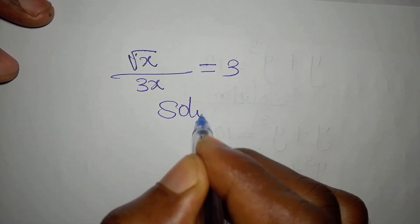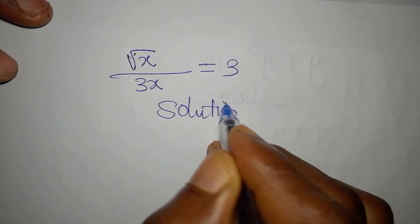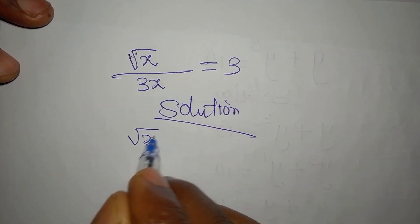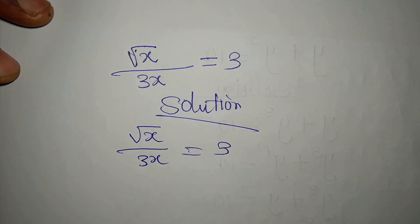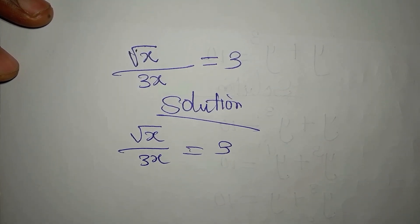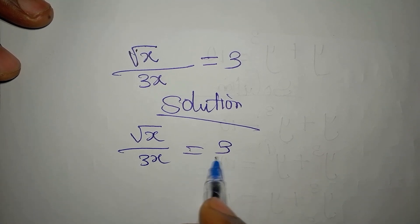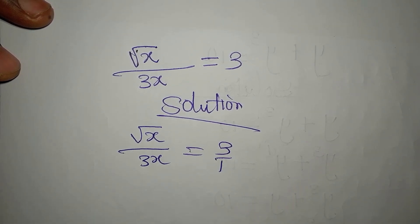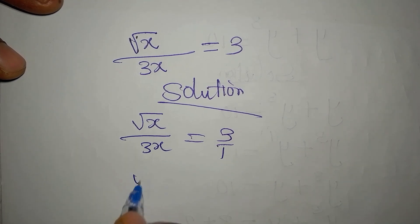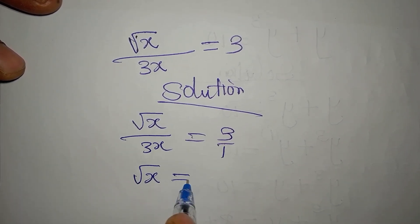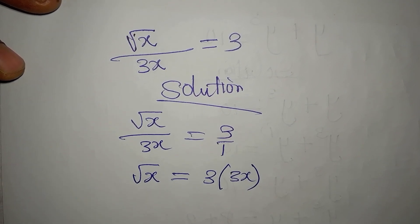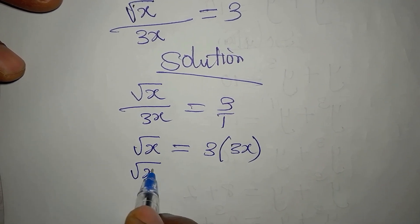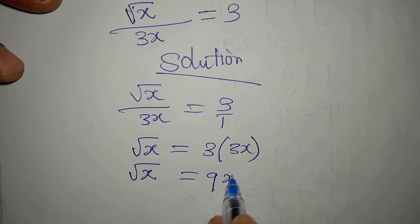Let's solve this together: root x over 3x equals 3. This is very simple because we can cross-multiply, so root x times one is root x, and that equals 3 multiplied by 3x. So root x is equal to 9x.